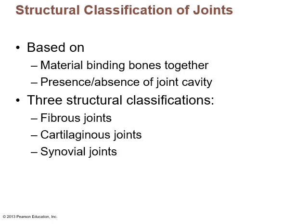Structural classification is based on the material that binds the bones together, and the joints could have a joint cavity, but you only find joint cavities in synovial joints, the last category. The three structural classifications are fibrous joints, cartilaginous joints, and synovial joints, which are very complex and have a joint cavity.